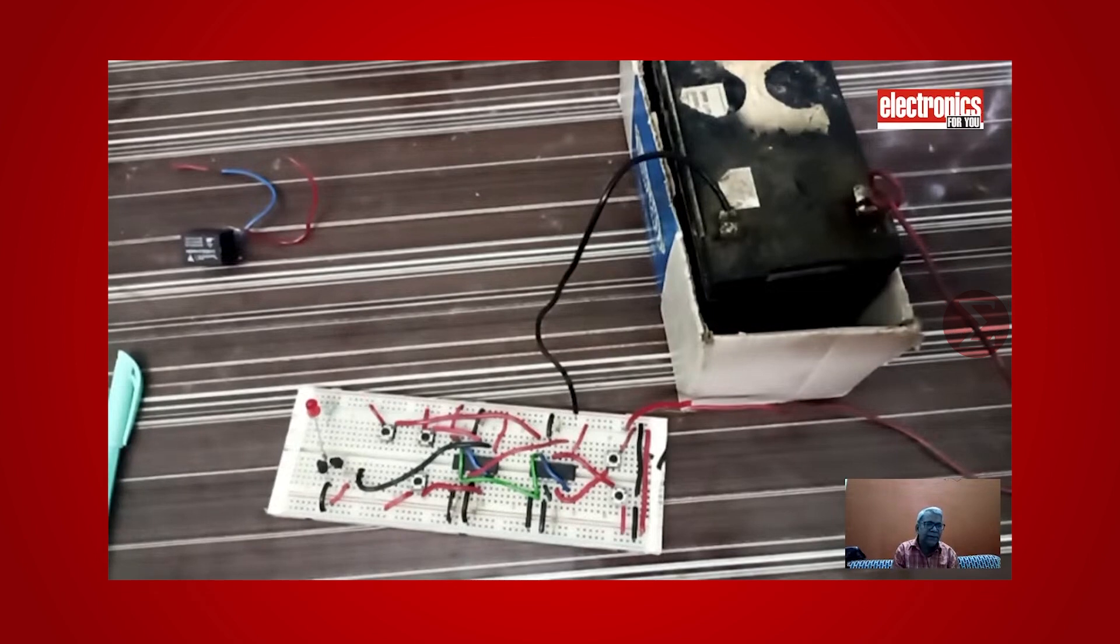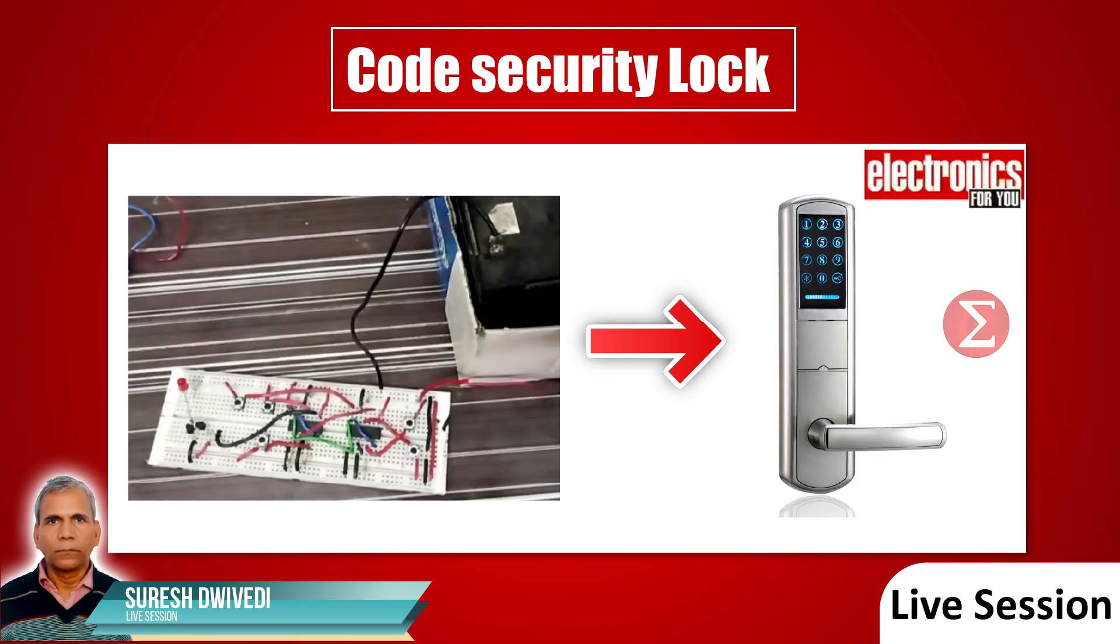To connect this circuit at the main gate, make this circuit on a general PCB and put it in a box with push buttons visible to the users. This is all about this project. We hope you liked it. Do implement this project at home and let us know your experience. Thank you.